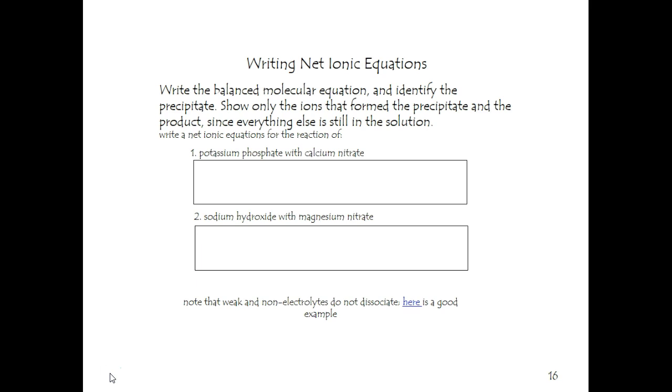Then identify a precipitate. Show the ions that form the precipitate and the product. Everything else is still in solution. They are spectator ions. They can be ignored since they really do not play a role in the chemical reaction. They might play a role in the rate of the reaction, things like that, but they are still spectator ions.